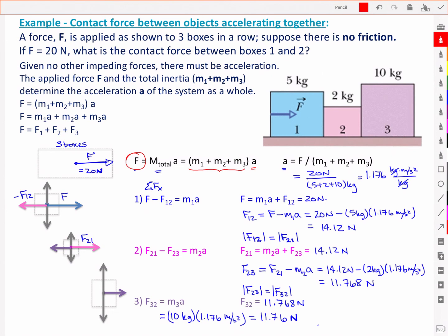And so the contact that I was asked for was the contact force between boxes 1 and 2. And that's this value here, F12, which is the same in magnitude as F21. The force that 2 exerts on 1 is equal and opposite to the force that 1 exerts on 2. And that follows all the way through in terms of action-reaction pairs. And so I see that the contact force exerted by box number 1 on box number 2 is 14 newtons, and the force that box number 2 exerts on box number 3 is 11.76 newtons.